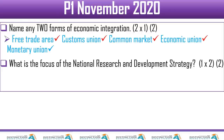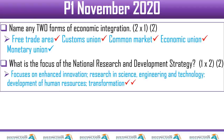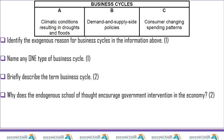Question 4: name any two forms of economic integration — free trade area, customs union, common market, economic union, and monetary union. What is the focus of the national research and development strategy? It focuses on enhanced innovation, research in science, engineering and technology, and development of human resources or transformation.